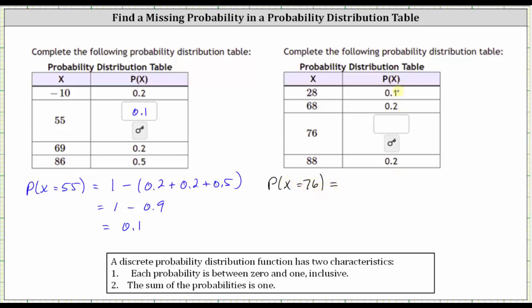And again, because the sum of the four probabilities must be one, the missing probability must be equal to one minus the sum of the other three probabilities, which would give us one minus the quantity 0.1 plus 0.2 plus 0.2. And 0.1 plus 0.2 plus 0.2 is 0.5, giving us one minus 0.5, which is equal to 0.5.